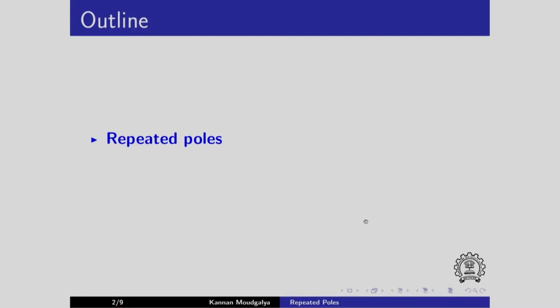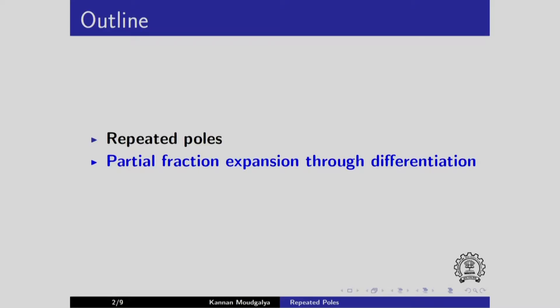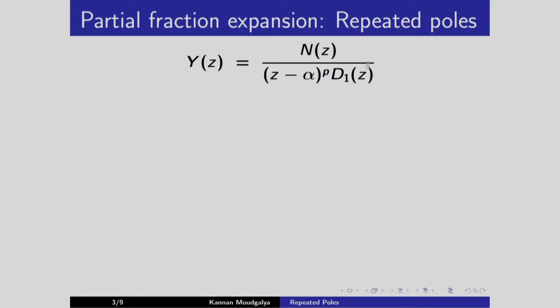Welcome to this presentation on repeated poles in Z-transform. We will consider a Z-transform with repeated poles and obtain the partial fraction expansion through differentiation. Let us consider a transfer function where the expression for Y(z) is given. Z minus alpha to the power p is not a factor in the numerator N, nor in d1. It is pulled out to the power p, indicating repeated poles.